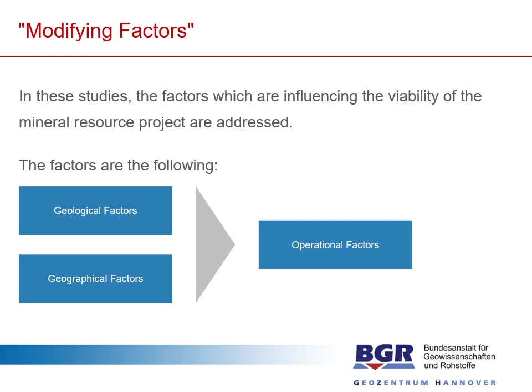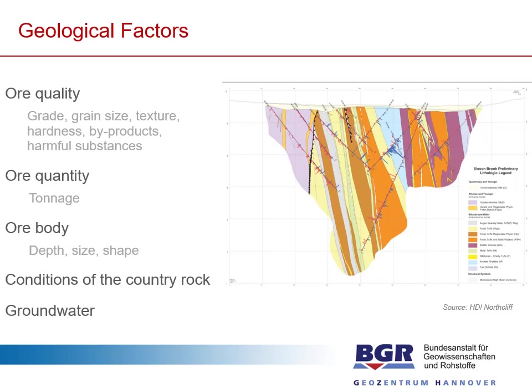In these studies, it's not only about grade and tonnage — it's also about factors influencing the viability of the mineral resource projects. These include geological factors and geographical factors that together form the operational factors. The geological factors include the ore quality — grade, grain size, texture, hardness of the ore, by-products or harmful substances — as well as the tonnage, depth, and size of the ore body, because this defines the mining method and the waste-to-ore ratio, and the conditions of the country rock.